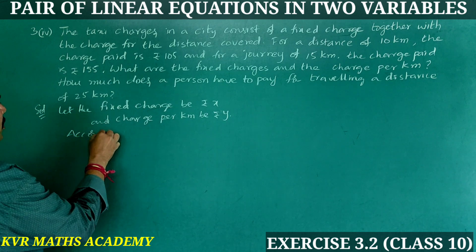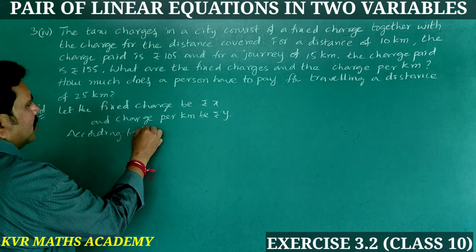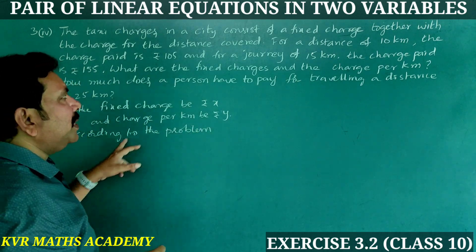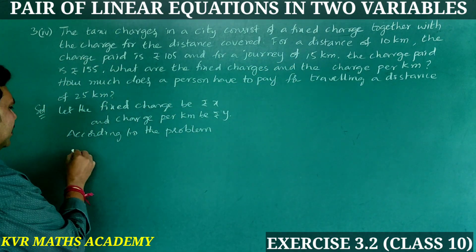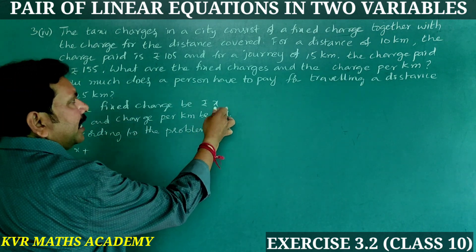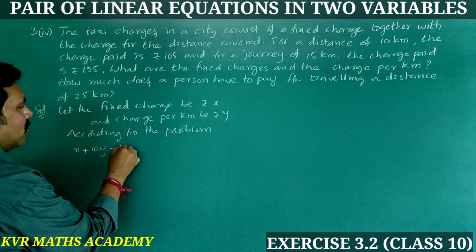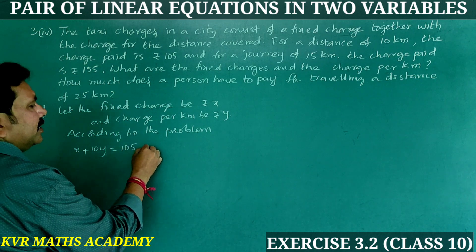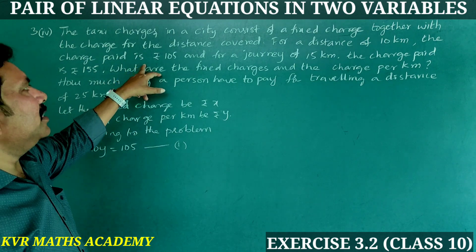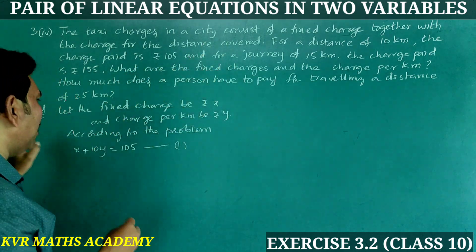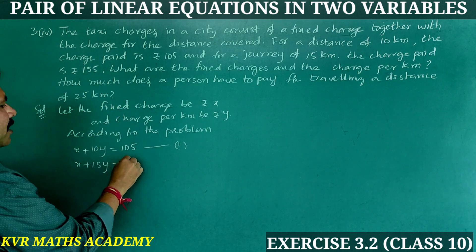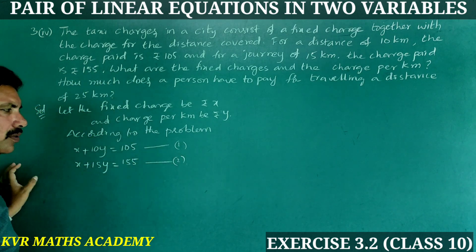According to the problem: fixed charge plus 10 km travel — 1 km costs Y, so 10 km costs 10Y. So X + 10Y = Rs. 105. This is equation 1. Next: fixed charge plus 15 km travel gives X + 15Y = Rs. 155. This is equation 2.